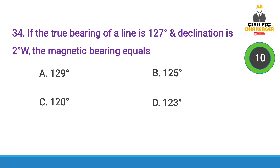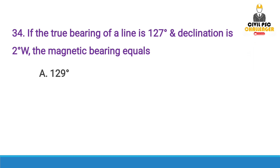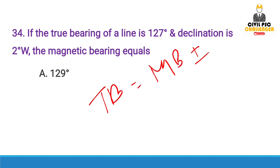Next question: If the true bearing of a line is 127° and declination is 2° East, the magnetic bearing equals — Answer option A, 129°. The formula: True bearing = Magnetic bearing ± magnetic declination.